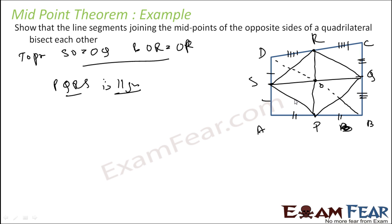SP is parallel to DB and SP equals half of DB. Similarly QR is parallel to DB and QR equals half of DB. Therefore SP is parallel to QR and they are equal, so PQRS is a parallelogram. Since it is a parallelogram, its diagonals bisect each other — that is a property. Thus SO equals OQ and OR equals OP. Proved.